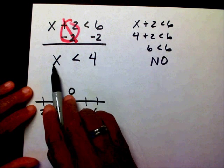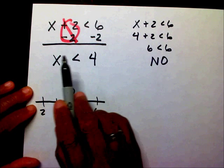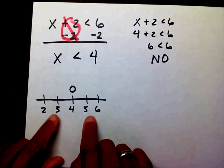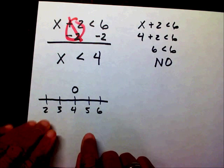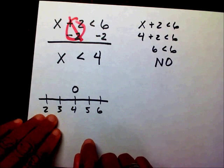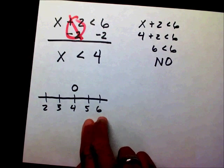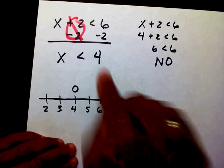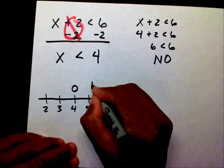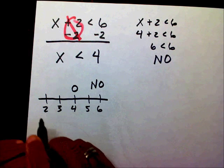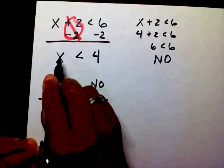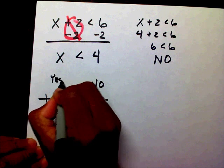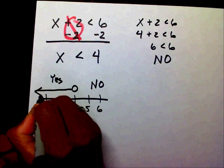Which numbers are less than 4 on both sides of this 4? Are these numbers less than 4? Is 5 and 6 less than 4? No. Is 2 and 3 less than 4? Yes. So therefore, my number line is going to be pointing that way — to the left.